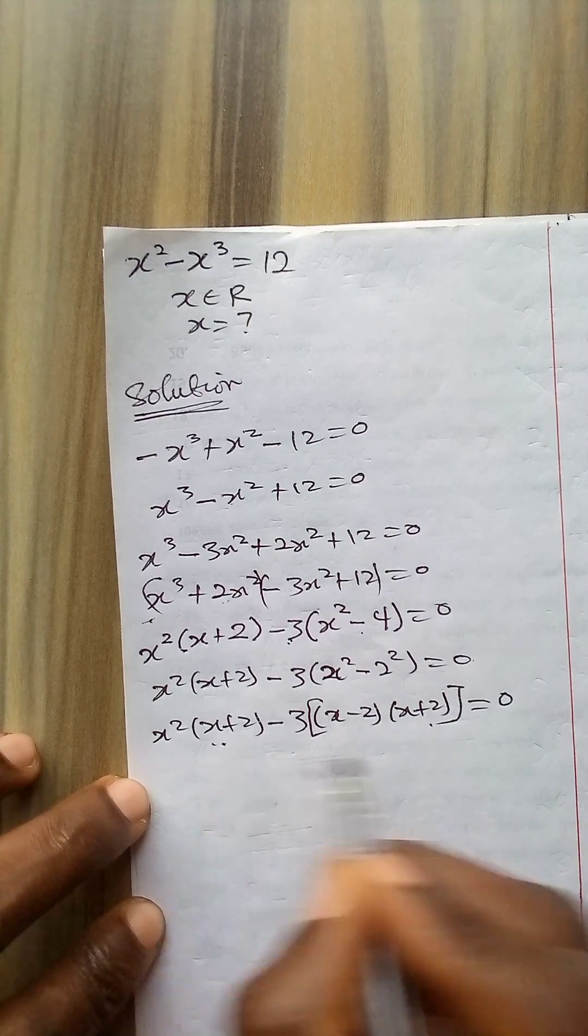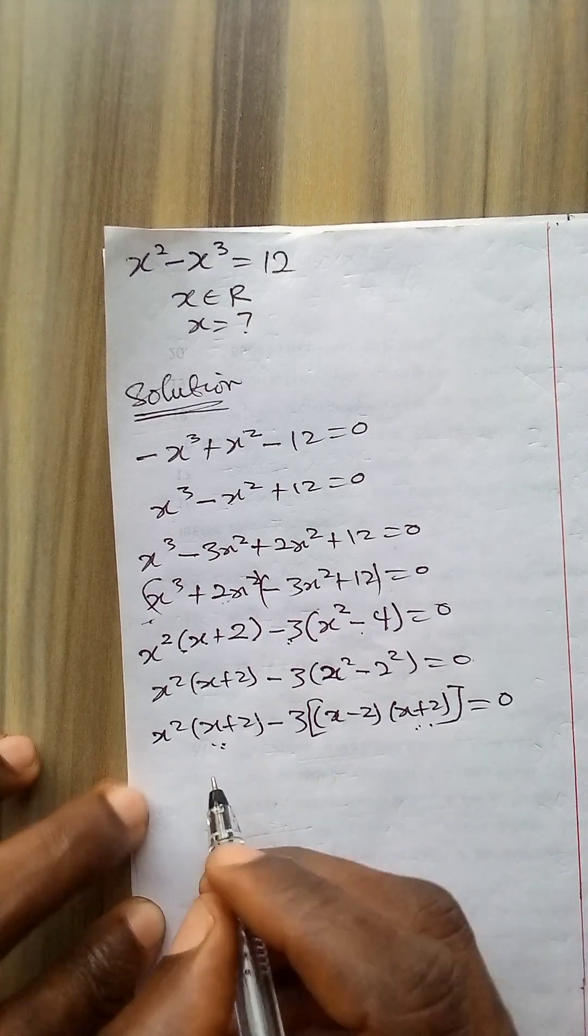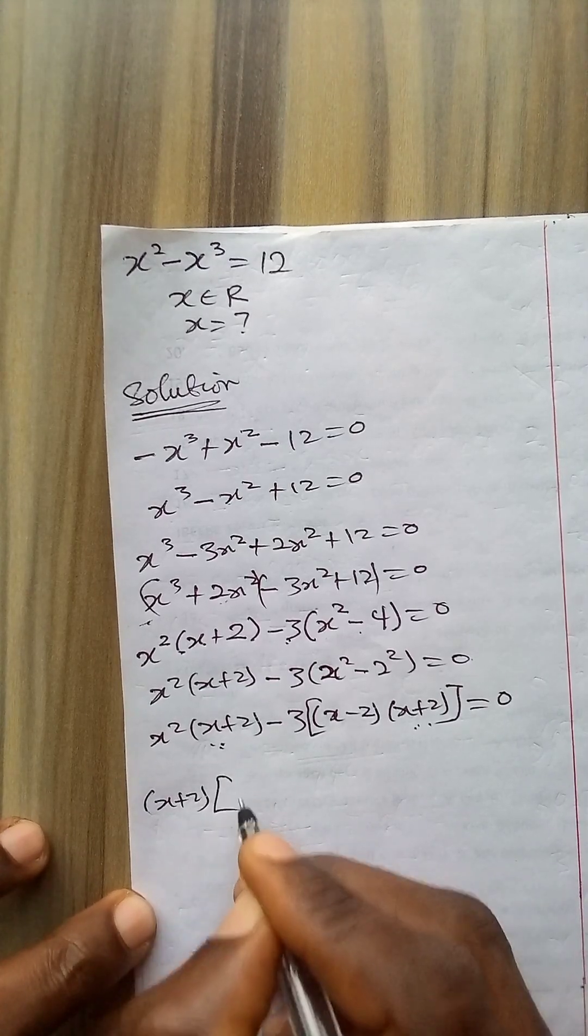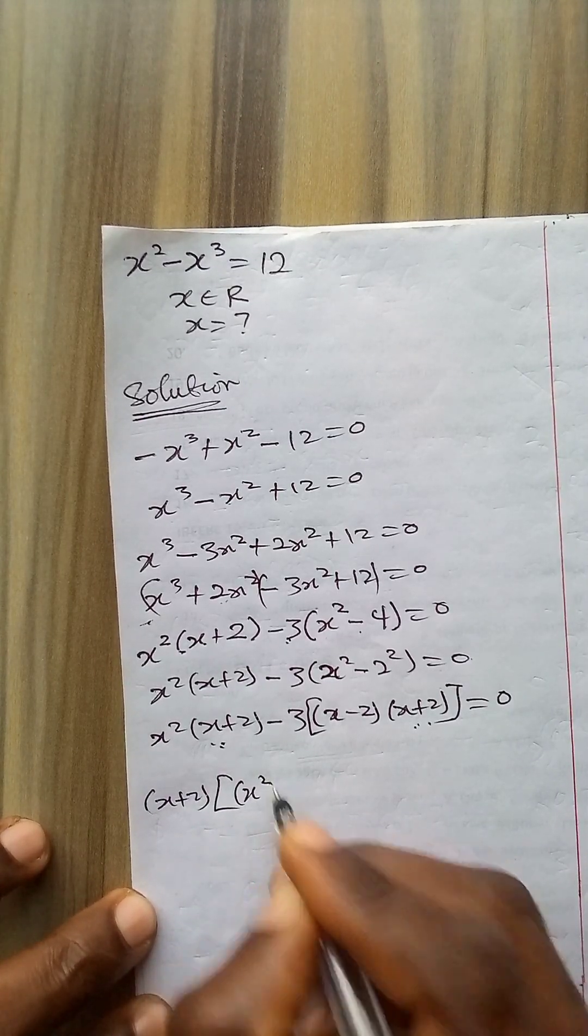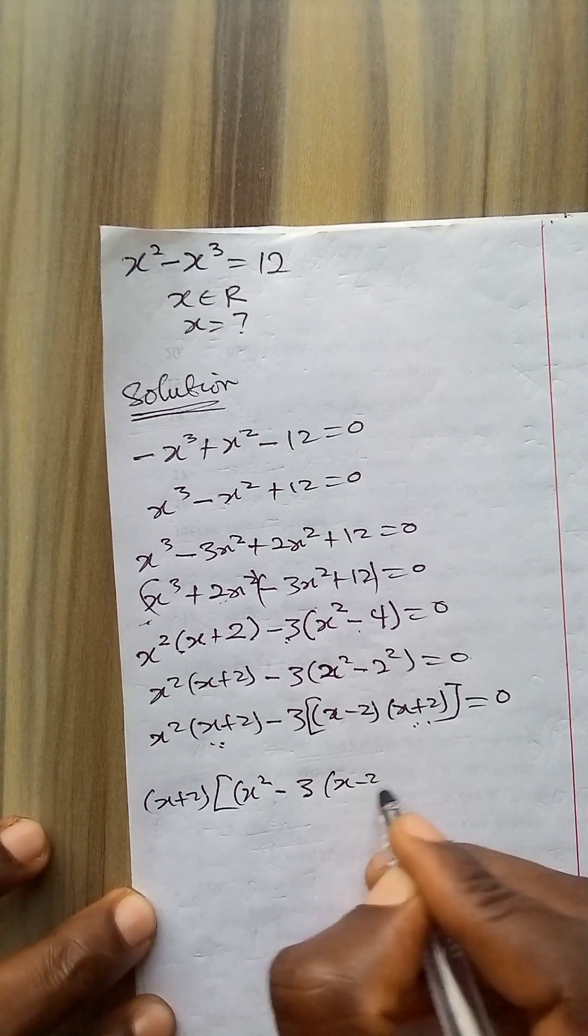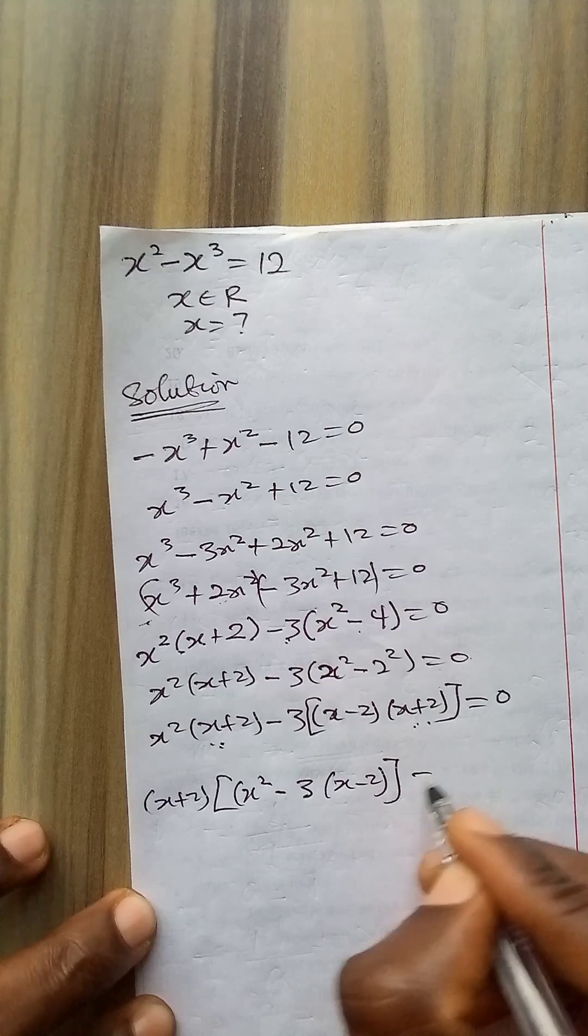Now these terms are common. These terms in the bracket are common. If I bring them out, I have (x plus 2) bracket x squared minus 3, remaining x minus 2, close bracket equals 0.